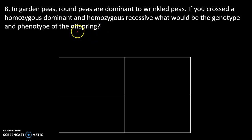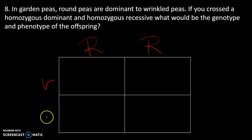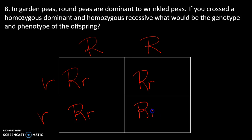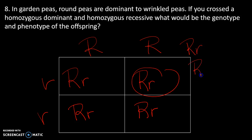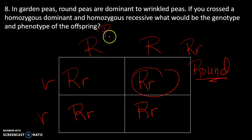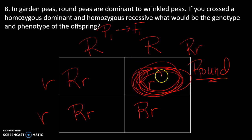Last couple: round peas are dominant to wrinkled peas. Cross a homozygous dominant with a homozygous recessive — we always end up with heterozygous offspring, so they're all going to be heterozygous and all round. This mirrors Mendel's original experiment: in the P1 generation he crossed homozygous plants, getting the F1 generation of all heterozygous offspring, and crossing those F1 plants gives us the F2 generation.